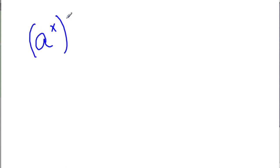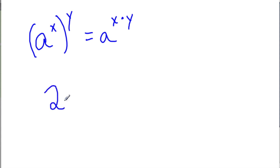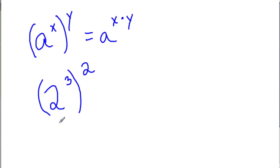Another property: let's say we have some base to some power, and we raise that entire thing to another power. Just take the base and multiply the exponents. For example, 2 to the third power, and then that to the second power. PEMDAS and the order of operations tells us to deal with the inside of the parentheses first. 2 to the third power is 2 times 2 times 2, and that's in parentheses — we haven't dealt with the outside exponent yet.